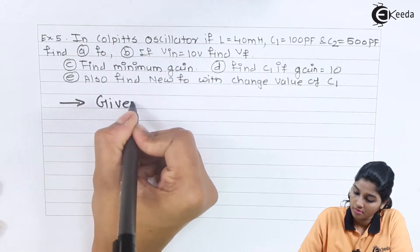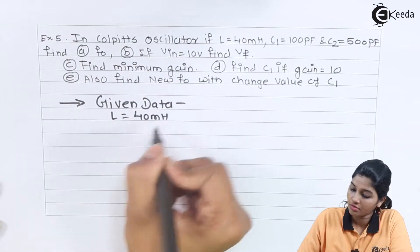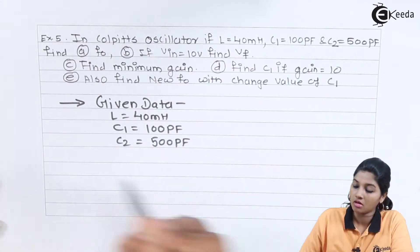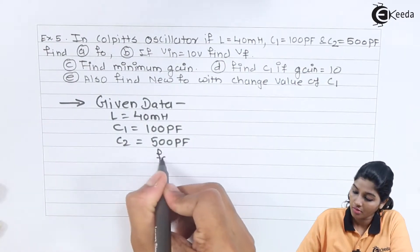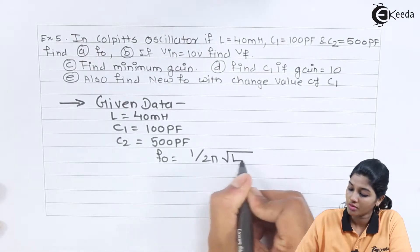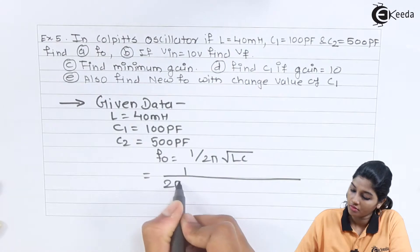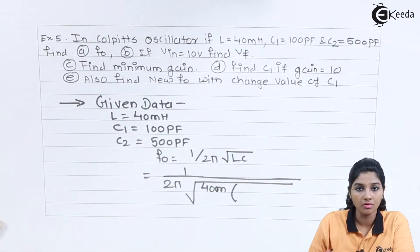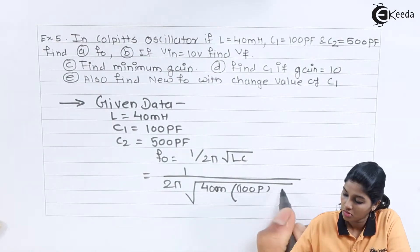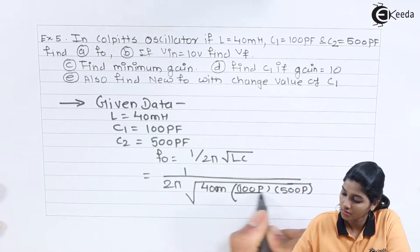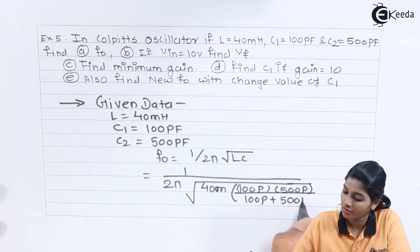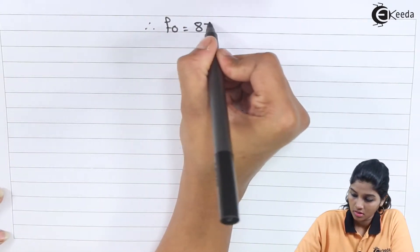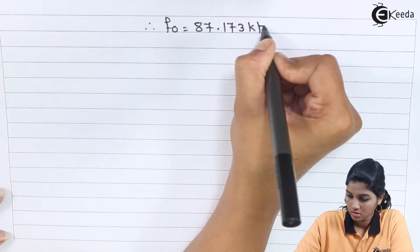First, find the frequency of oscillation f0 using the formula f0 = 1/(2π√(LC)), where C is the series combination C = (C1×C2)/(C1+C2) = (100 pF × 500 pF)/(100 pF + 500 pF). Substituting L = 40 mH gives f0 = 87.173 kHz.